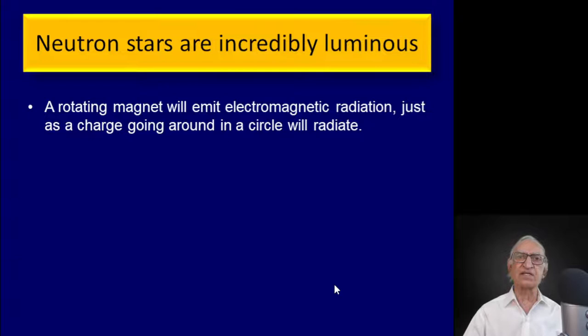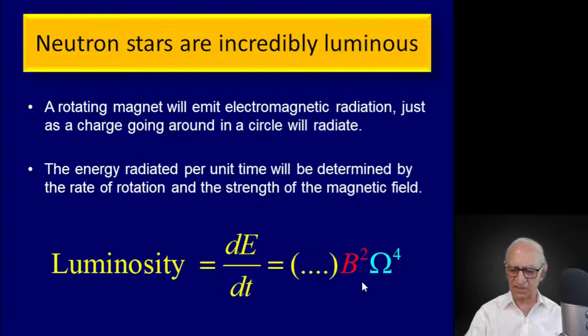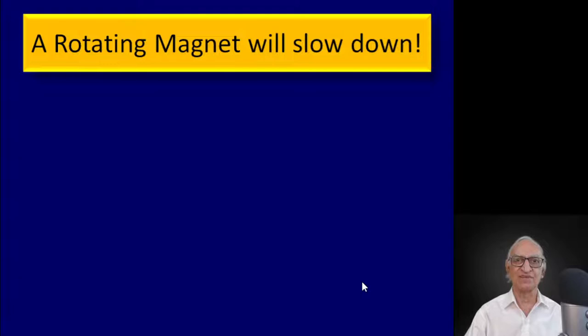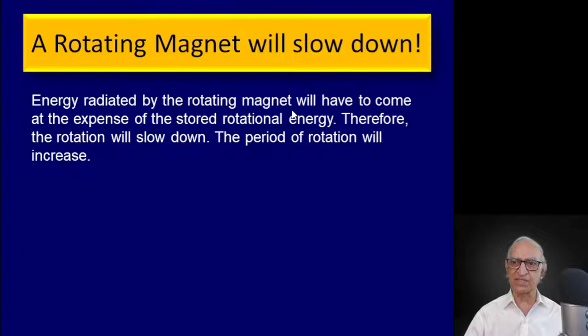Neutron stars are incredibly luminous bodies. A rotating magnet will emit electromagnetic radiation — the energy radiated per unit time is proportional to B² ω⁴. Where does this energy come from? It cannot come from the DC magnetic field. Therefore, the energy must come from the stored rotational energy of the neutron star, and therefore the neutron star will slow down in its rotation rate.